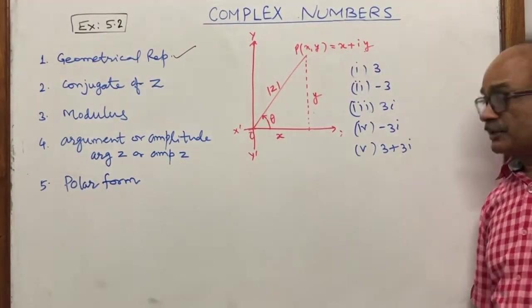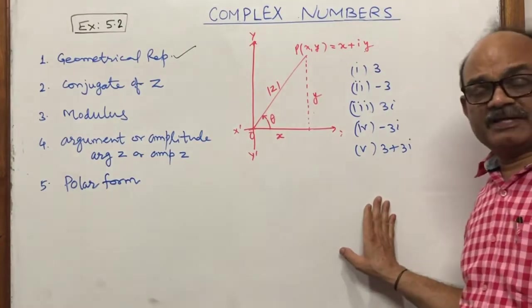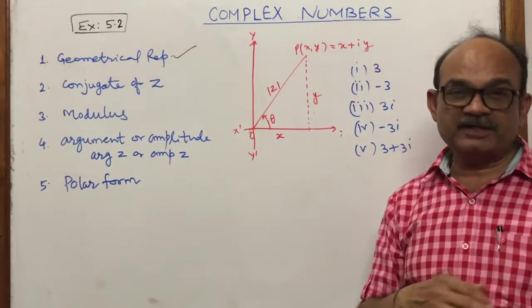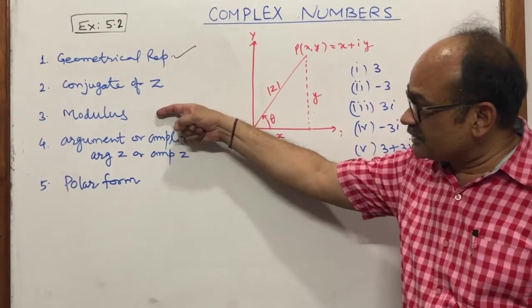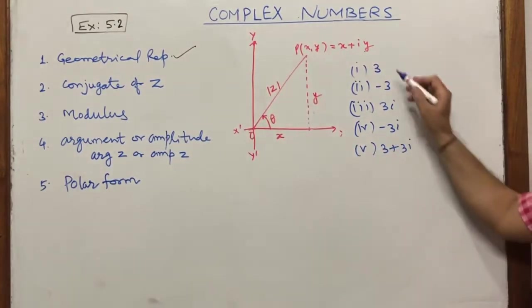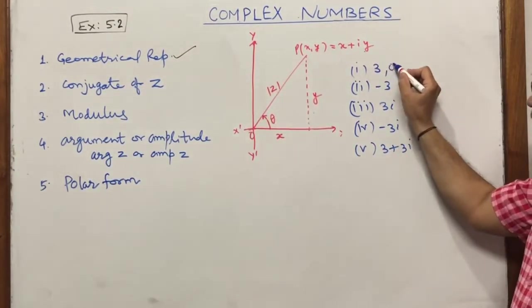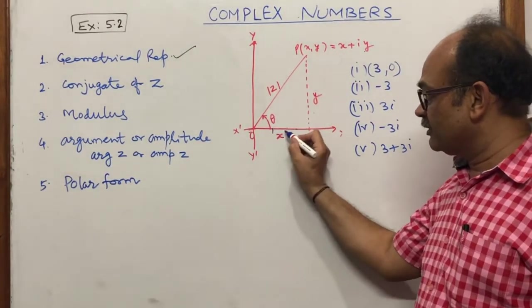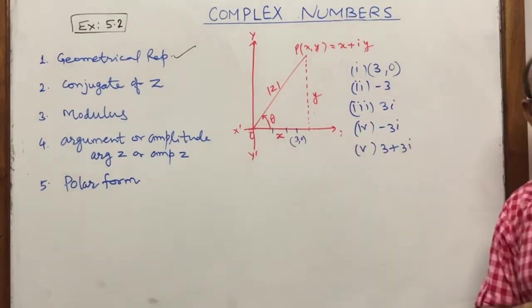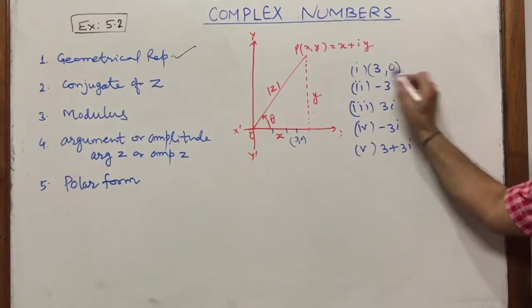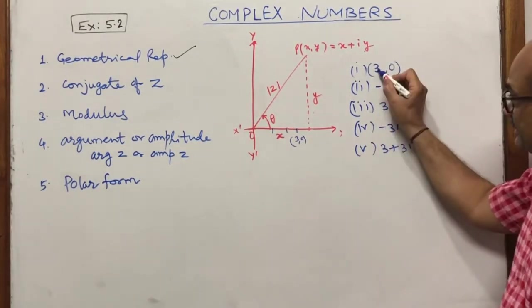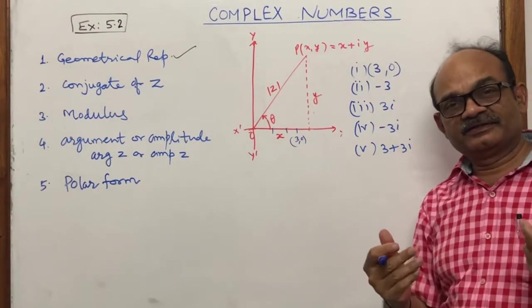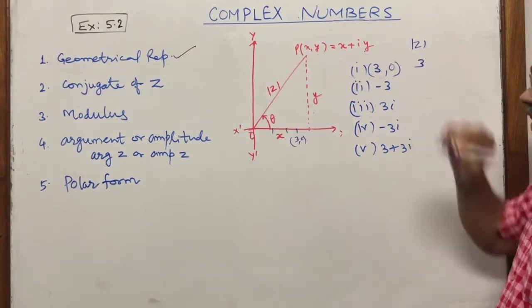Now a few problems: how to plot complex numbers on the Argand plane and calculate their argument and modulus. First, consider z = 3, which is 3 + 0·iota, plotted at (3, 0). The modulus is √(3² + 0²) = √9 = 3.